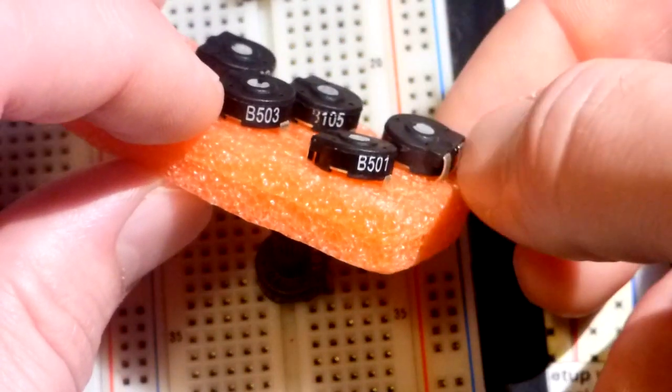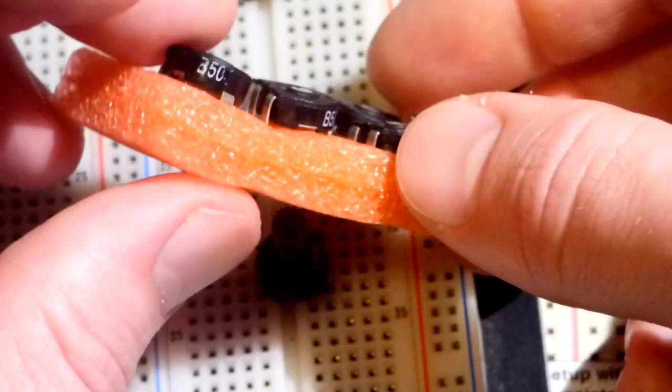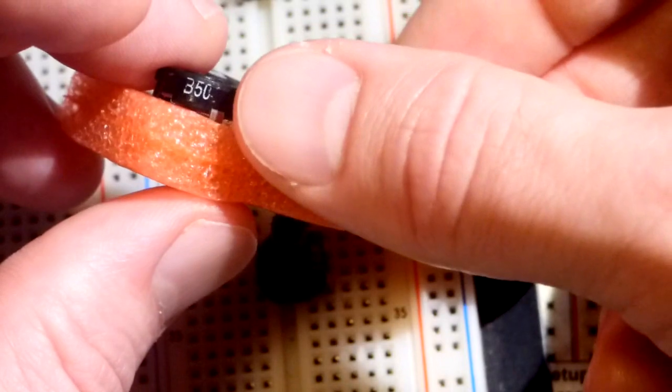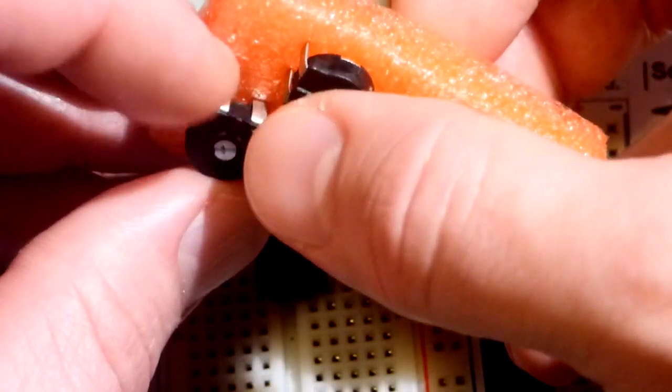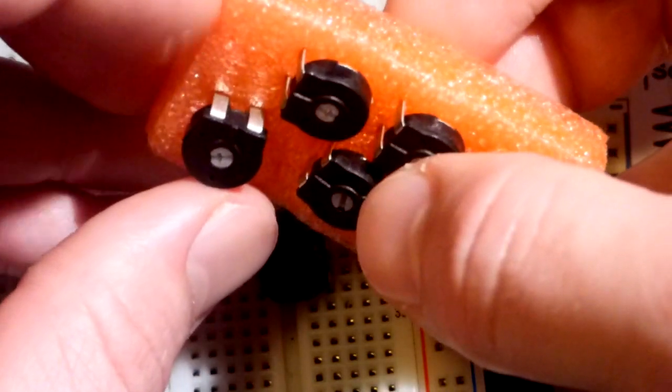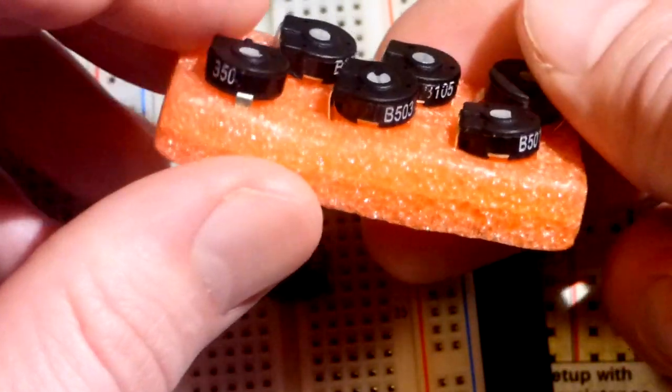And they don't all start with 5. That one starts with a 1. The B is wearing off. And that's a 5, 0. That one wore off. We would have to take a multimeter and measure across the two terminals right there to get its value.